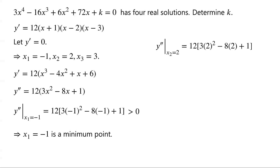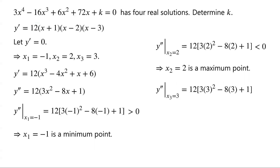When x₂ equals 2, y'' equals 12 times (3 times 2² minus 8 times 2 plus 1), which is less than 0, so x₂ equals 2 is a maximum point. When x₃ equals 3, y'' equals 12 times (3 times 3² minus 8 times 3 plus 1), which equals 12 times (27 minus 24 plus 1), which is greater than 0, so x₃ equals 3 is a minimum point.